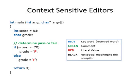Here's an example for C or C++ where blue indicates a keyword — a word that's reserved by the language — green is a comment, red is a literal value, and black has no special meaning to the compiler. For example, the keywords IF and ELSE are part of the C and C++ language. These words are used as part of the IF statement; they have special meaning and cannot be used as identifiers or variable names in your programs.